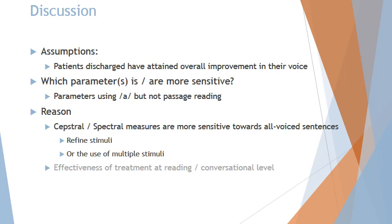Another reason we postulated — though we don't want it to be true — is that the effectiveness of our treatment, although we made the clinical decision that patients improved overall, may not have been effective at reading or conversational level. I doubt that this is true and I certainly hope it's not. Of course it would have to be supported by other data from our perceptual or VHI measurements, but this is not the scope of this study. We certainly hope this is not true, but it could be one of the reasons why.